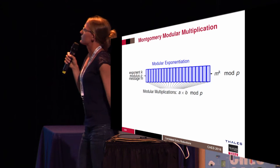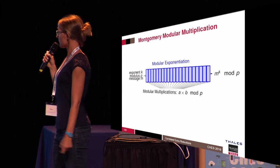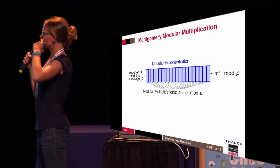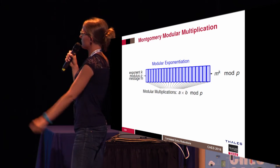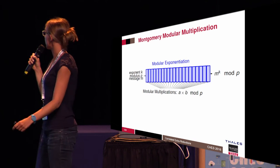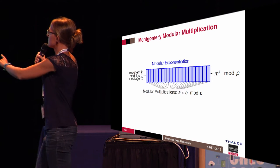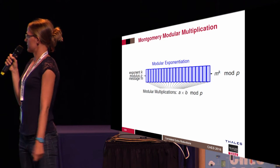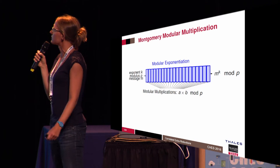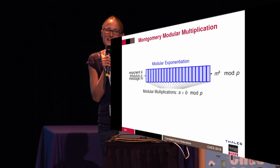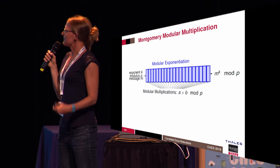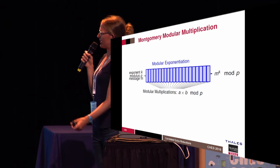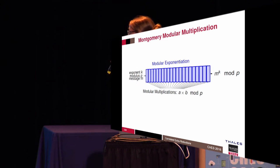To begin, the modular exponentiation in RSA is the private operation. You have an exponent k, and we just make the message raised to power k modulo p. To make this modular exponentiation, we make a lot of modular multiplications. All these multiplications can be optimized for efficient computation. We have several algorithms such as Montgomery Modular Multiplication, Barrett, or similar methods to be efficient.